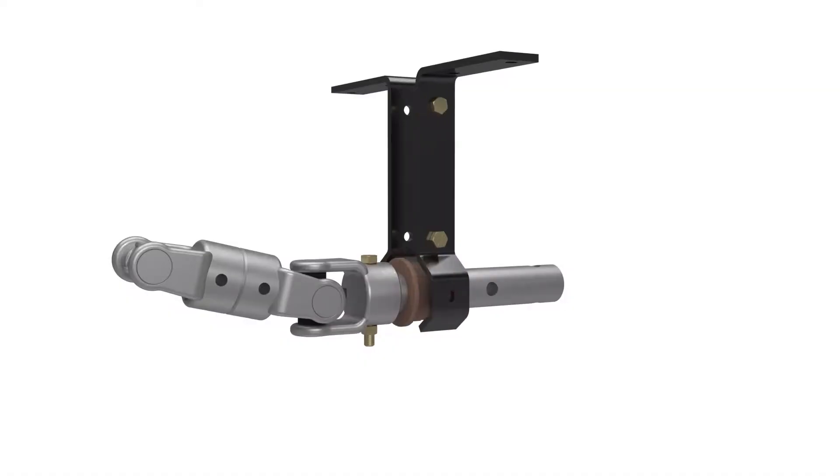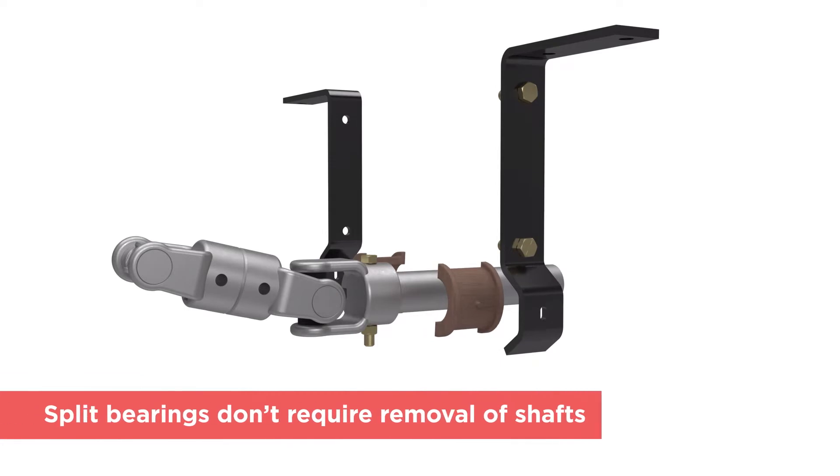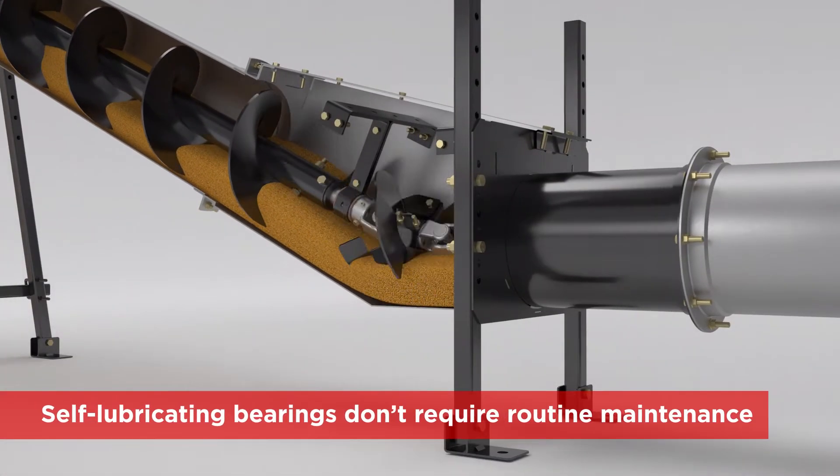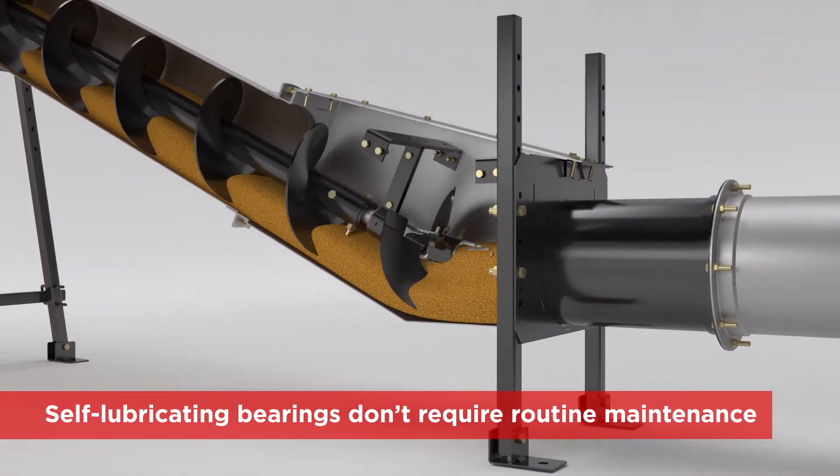Speaking of bearings, Brock uses split wood bearings that don't require removal of shafts for service. These oil impregnated bearings are self lubricating and don't require routine maintenance.